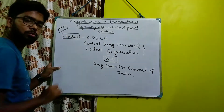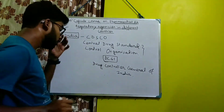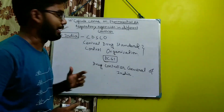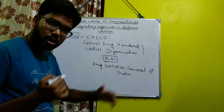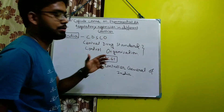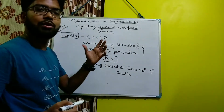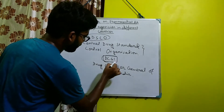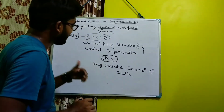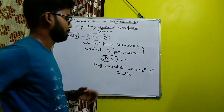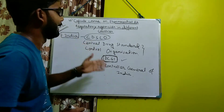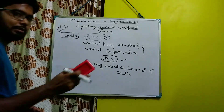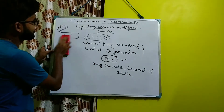The examiner may ask you a question regarding which is the regulatory body of India. If you do not find CDSCO in the options and there is an option like DCGI, then you can pick DCGI, because DCGI is the head of our CDSCO. Then coming to the next regulatory agency.